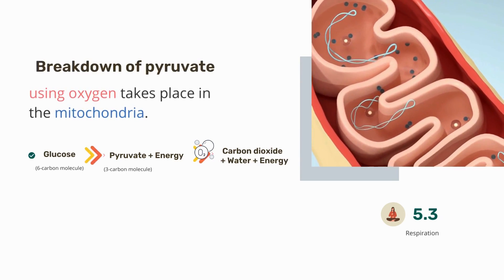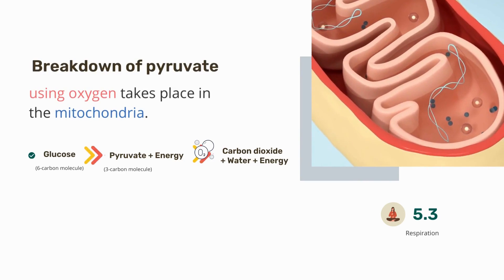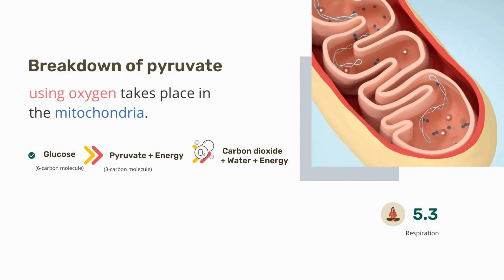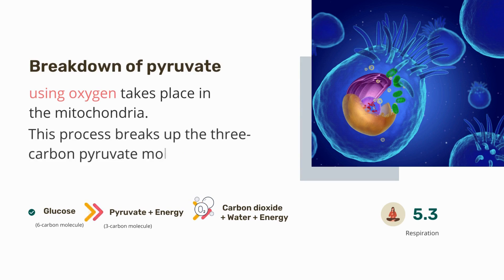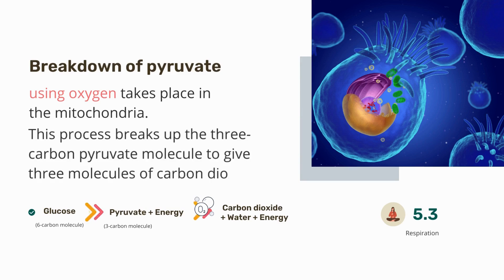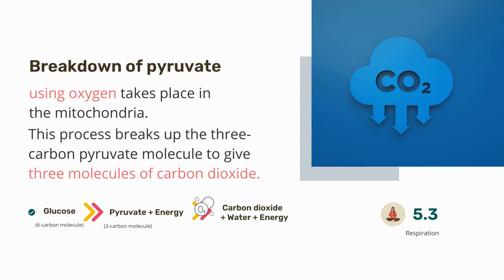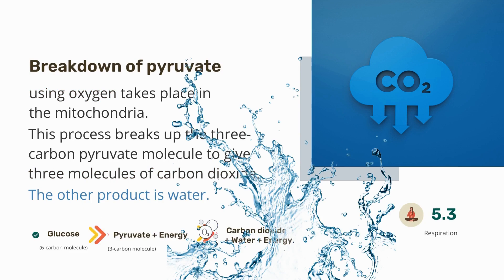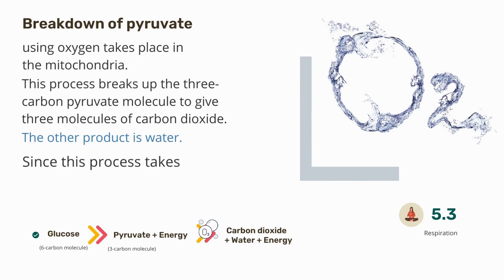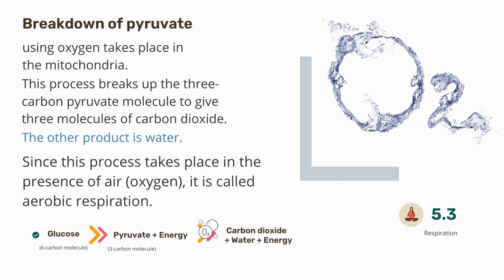The breakdown of pyruvate using oxygen takes place in the mitochondria. This process breaks up the three-carbon pyruvate molecule to give three molecules of carbon dioxide. The other product is water. Since this process takes place in the presence of air or oxygen, it is called aerobic respiration.